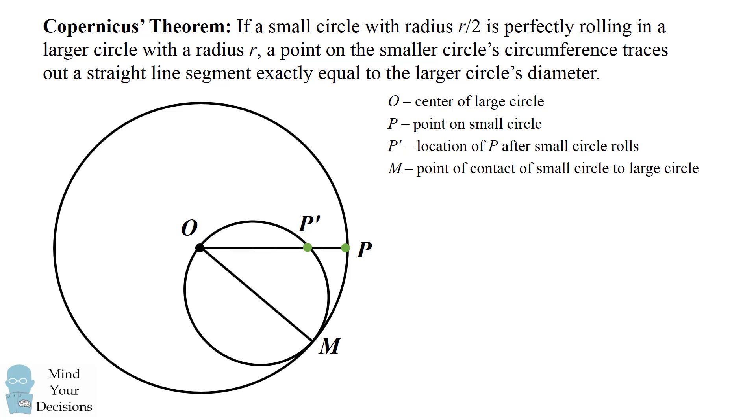So what we want to prove, is we want to prove that P' and P are on the same straight line diameter of the large circle.